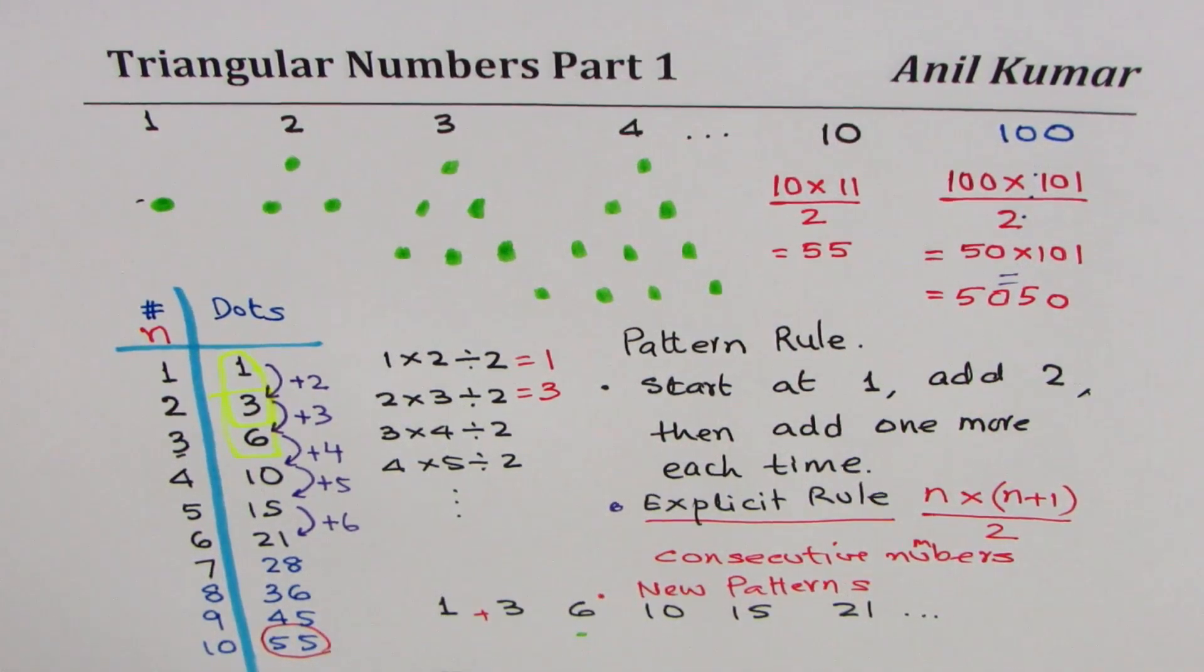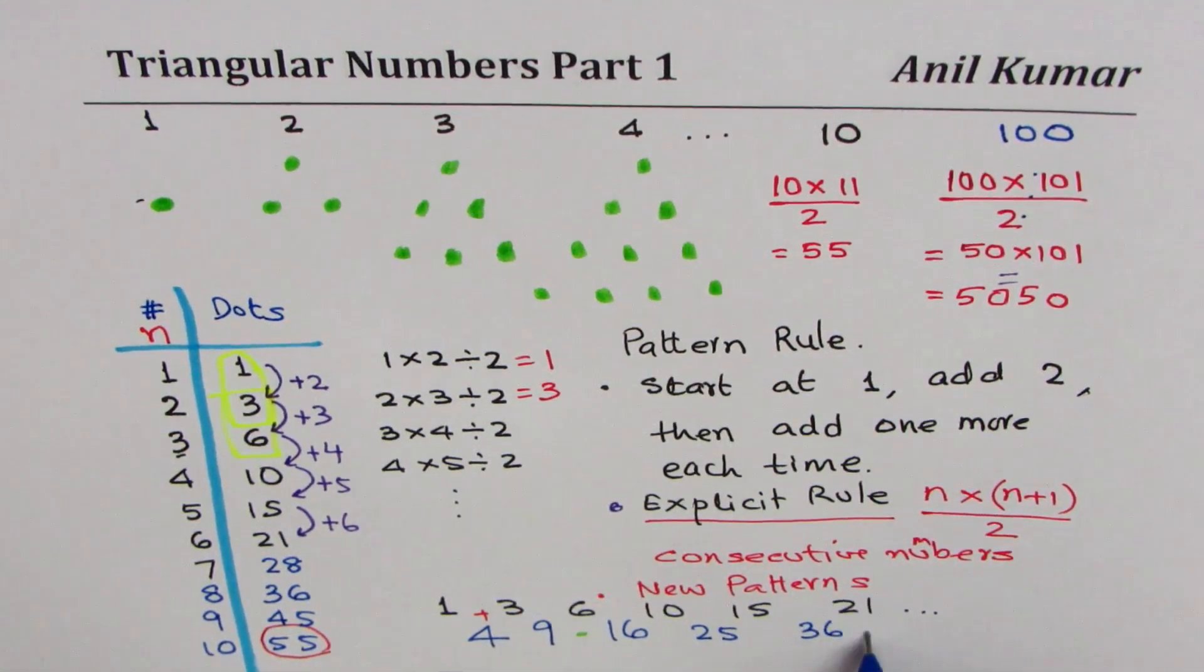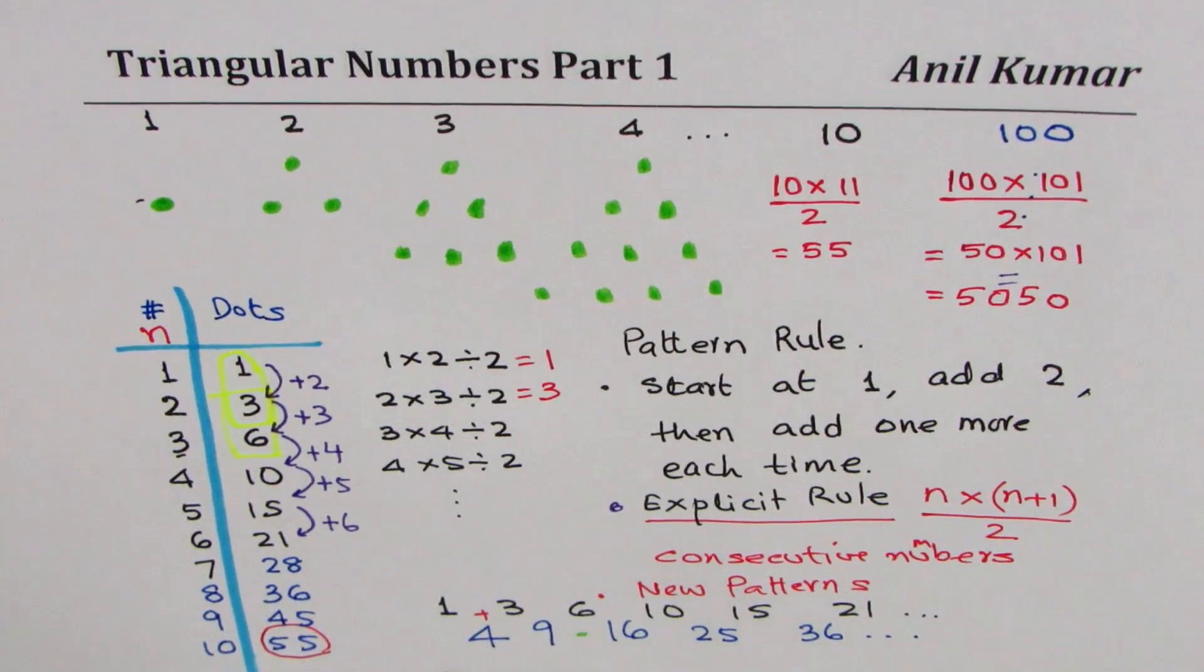what do I get? One plus three is four. What is three plus six? Three plus six is nine. Six plus 10 is 16. 10 plus 15 is 25. 15 plus 21 is 36, and so on.